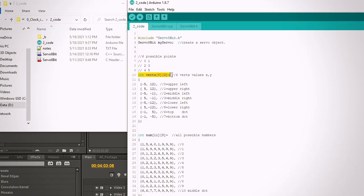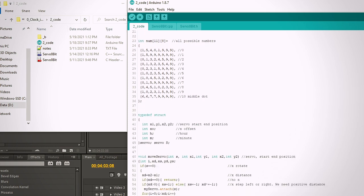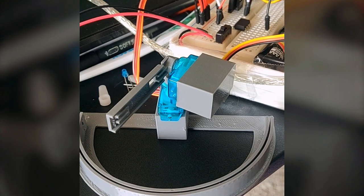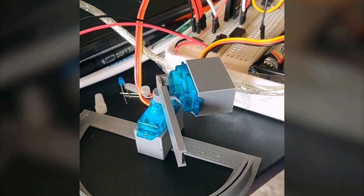I spent a lot of time writing the code to control the two servos and the light to draw out the current time. This was easier said than done, and I ran into many errors.